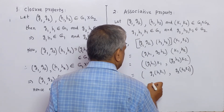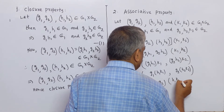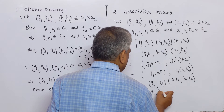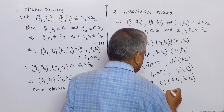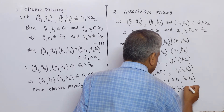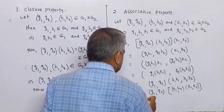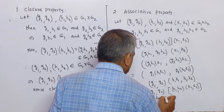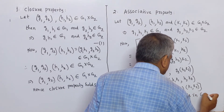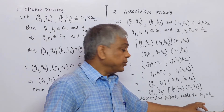This equals (g1·(h1·k1), g2·(h2·k2)) = (g1, g2) · (h1·k1, h2·k2) = (g1, g2) · [(h1, h2) · (k1, k2)]. Therefore, the associative property holds in G1 × G2, that is, associativity holds in the direct product of G1 by G2.